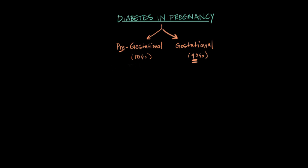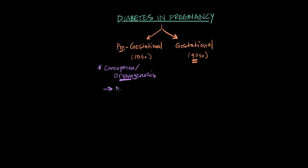Why do we split diabetes into these two different groups? Well, if a woman has pre-gestational diabetes, that means her blood sugars may have been poorly controlled at the time the baby was conceived, or even during the first eight weeks of the pregnancy — a period called organogenesis, when the fetus's organs are made. Those high levels of glucose during that pivotal time can lead to a miscarriage or significant anomalies within the fetus.